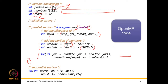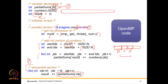Each thread adds its chunk: thread 0 adds the first chunk, thread 1 the second, and so on. All partial sums are stored in the array partial_sums. The parallel section then completes — this was the lion's share of the work. Then the sequential section begins, where a single thread iterates from 0 to n, adds all the partial sums, and stores the result in the variable 'result', which was initialized to 0.